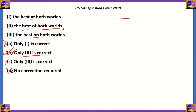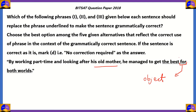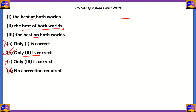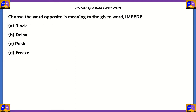Only two is correct. The actual phrase — the cliché we're looking for — is 'the best of both worlds.' By working part-time and looking after his old mother, he managed to get the best of both worlds, meaning he was able to work and earn money and also look after his old mother. He managed to gain both positives from both sides. Therefore, option B is the correct answer for this question from BITSAT 2018.